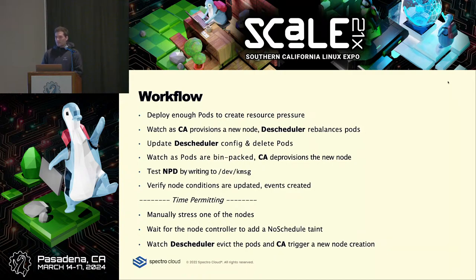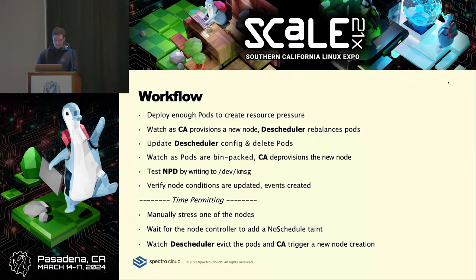Then we'll update the Descheduler config to do the reverse — to bin pack all of our workload — and delete some of the pods that created the resource pressure. We'll watch as pods are all allocated on a single node and Cluster Autoscaler deprovisions it. And then lastly, we'll write some messages straight to the kernel message log and watch as NPD updates the custom conditions that I've configured — visible in the Google console.